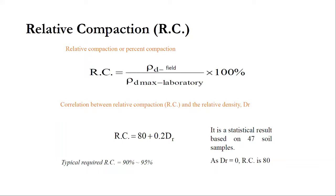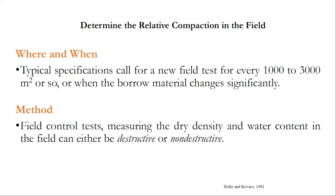The typical required relative compaction is 90 to 95 percent, but if it is more than 95 percent that is also acceptable. Regarding when and where to conduct the in-situ density determination test, typical specifications call for a new field test for every 1,000 to 3,000 square meters. It depends on project size — larger projects require more frequent testing. It also depends on the quality of the borrow material; if the properties change significantly, more frequent testing is needed.